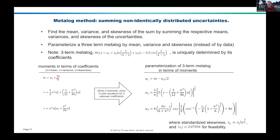For here, we're just going to work on the unbounded metalog, because the unbounded metalog has mean, variance, and skewness in closed form. If you have the A coefficients — A1, A2, and A3 — you can get, according to these equations, the mean, variance, and skewness exactly in closed form.